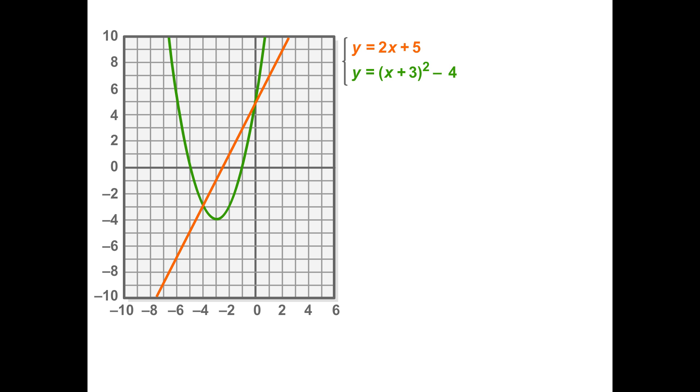Graph these two functions to see that they intersect at two points. Therefore, there are two solutions to this system: 0, 5, and negative 4, negative 3.